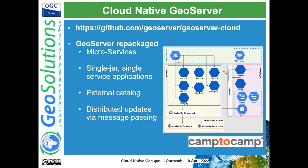One final thing: at GitHub under geoserver/geoserver-cloud you can find cloud-native GeoServer, which is a repackaging of GeoServer as microservices — single-jar Spring Boot applications. Each jar serves a single protocol, so we have one microservice for WFS, one for WPS, one for WMS, and so on, plus a microservice for the catalog and one for tiles, with distributed updates via message passing. It's interesting to see how a 20-year-old application can be modified into a bunch of microservices just because it was architected as a set of standalone pluggable modules.